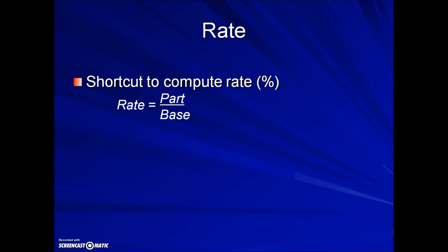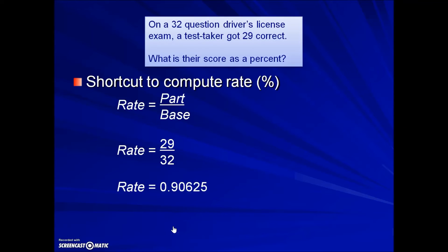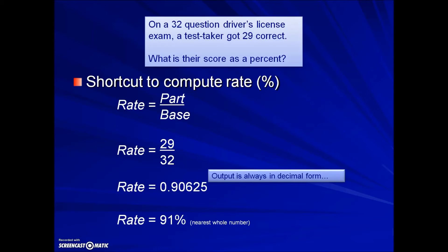To compute a rate, we can take part divided by base in a percentage problem. In this example, it states that on a 32-question driver's license exam, a test taker got 29 correct. What is their score as a percent? The base is always the total quantity — this will be the 32 questions — and the part is a portion of the base, in this case the number of questions the test taker got correct. Putting 29 in place of part and 32 in place of base, and doing the calculation — 29 divided by 32 — we end up with a decimal. Rate is always expressed as a percent, so we move the decimal two places to the right, giving us 90.6, which rounds to 91 percent.